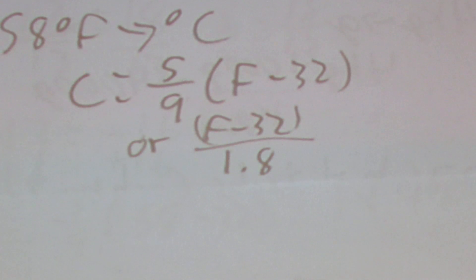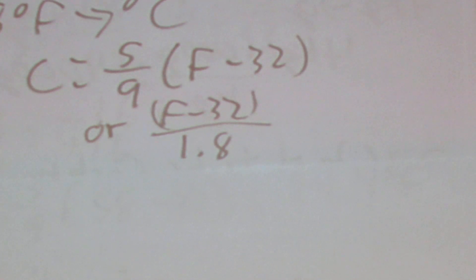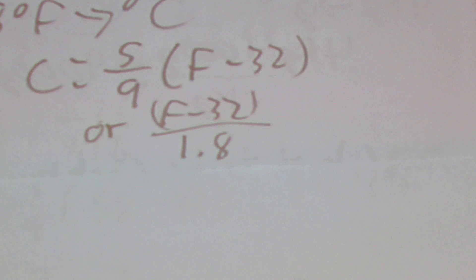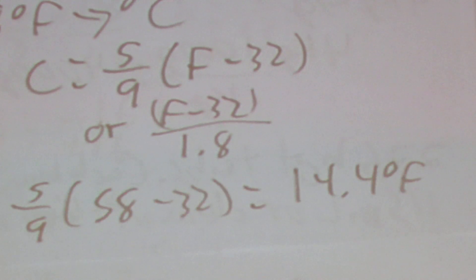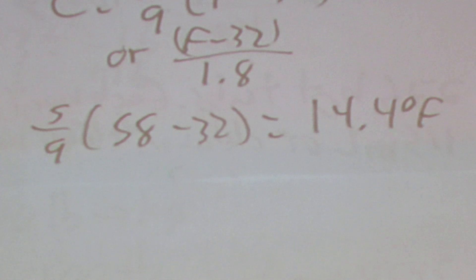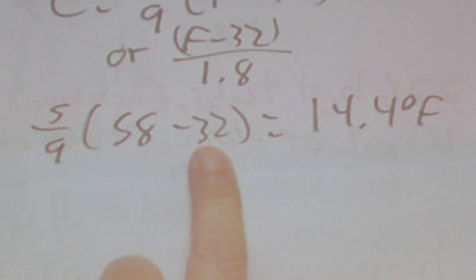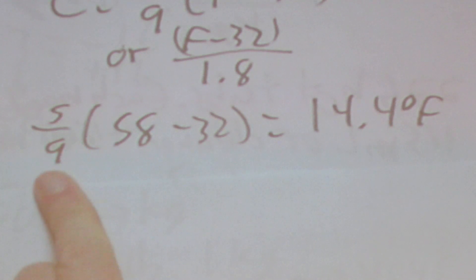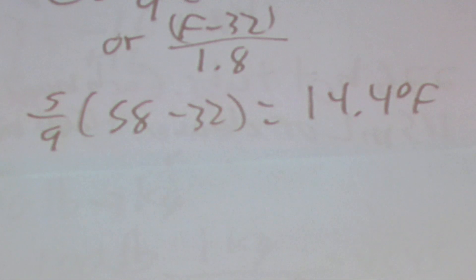The next type of question is a temperature conversion — converting 58 degrees Fahrenheit to Celsius. You can use either form: C = (5/9) times (F − 32), or (F − 32) divided by 1.8. Plugging in 58 for F: 58 minus 32 first, then times 5 divided by 9, and you'll get 14.4 degrees Celsius.